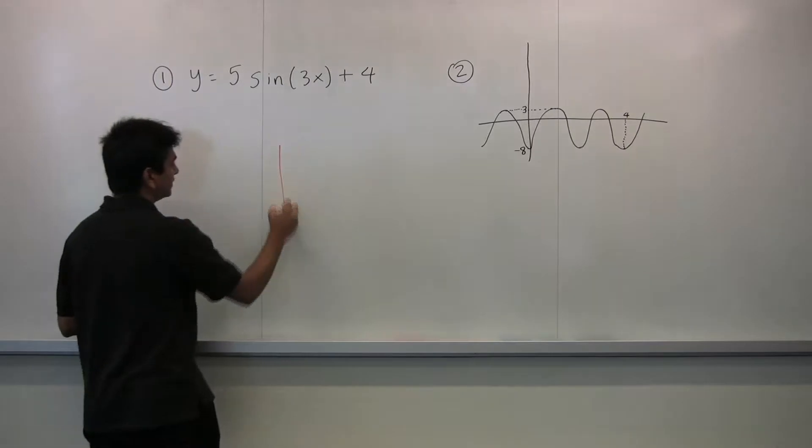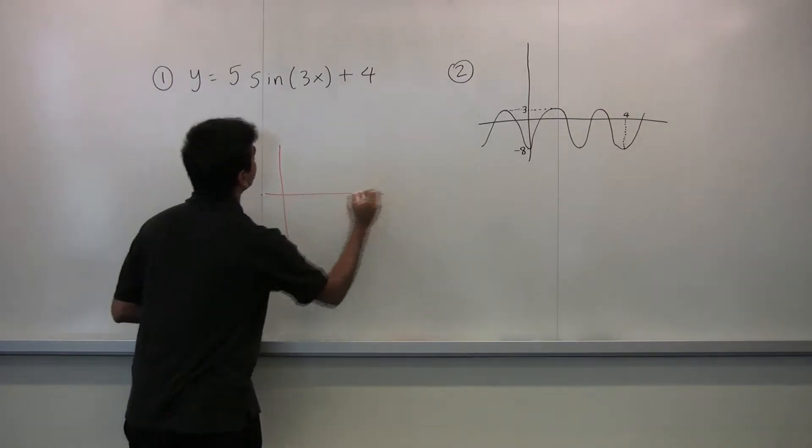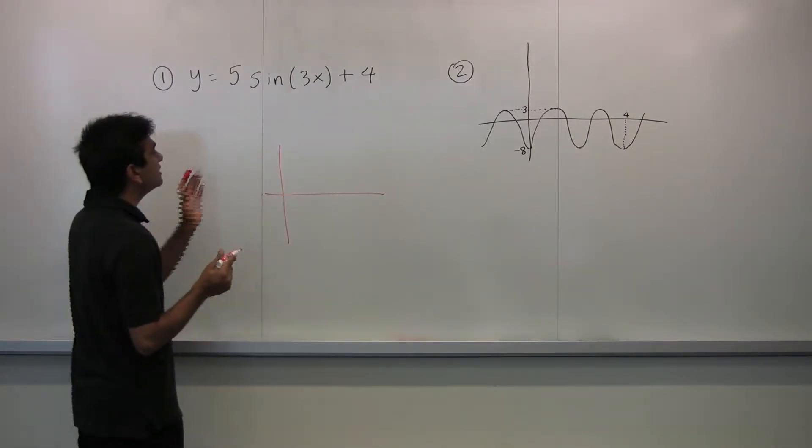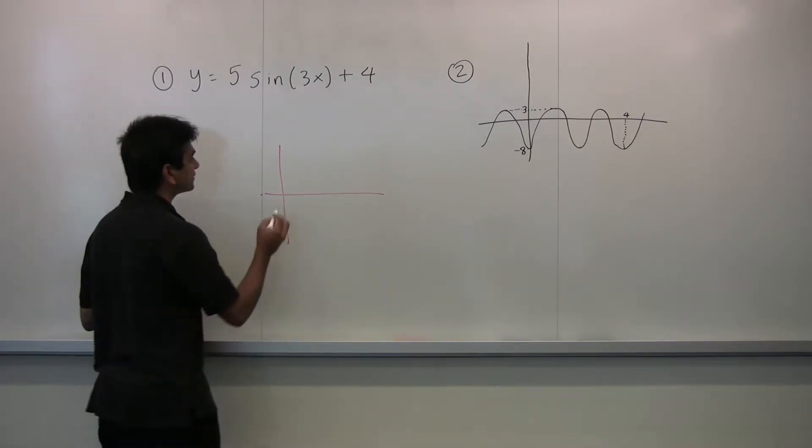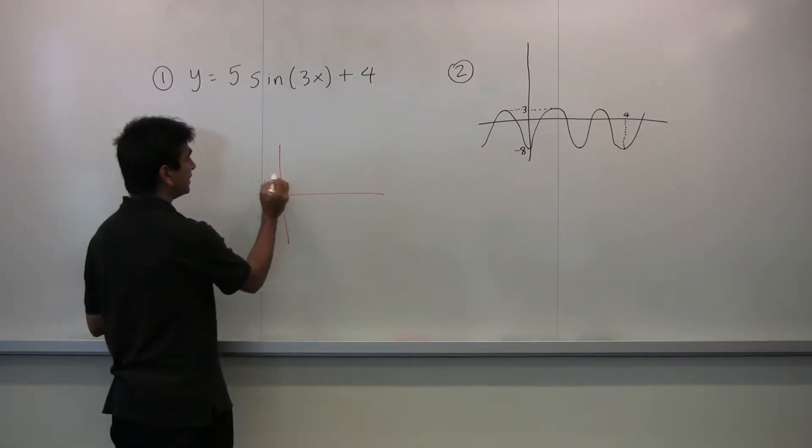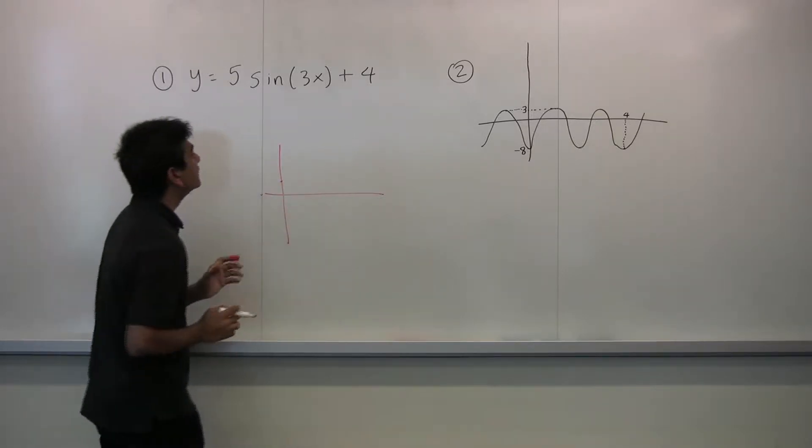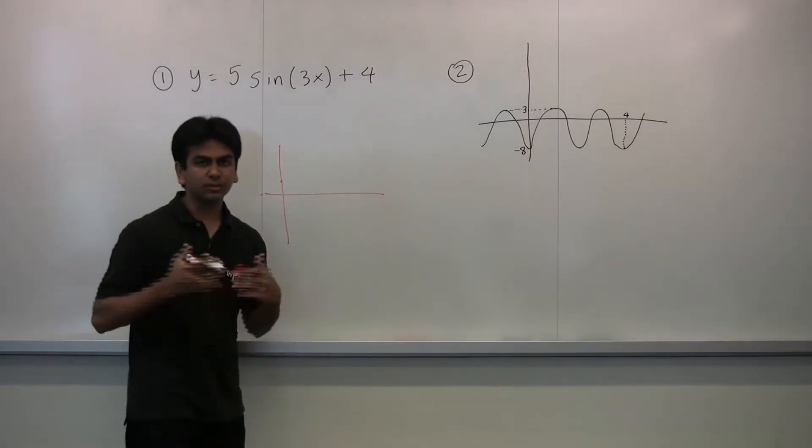To graph this function, let's first look at the fact that it's a positive sine function. What we know is that it will start from the center and go up. Looking at 4, that's what c is.